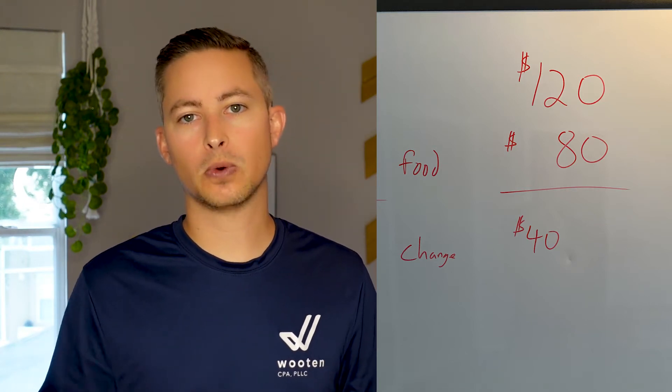Your friend gets change back — a refund — of $40. Your refund was $20, your friend's was $40. What people do nine times out of ten when it comes to their tax return is they look at the friend who got $40 back and say 'I've got a better CPA or tax preparer than you because I got $40 back.' But it's blatantly obvious in this example that you both ordered the exact same food and paid $80 for the meal.